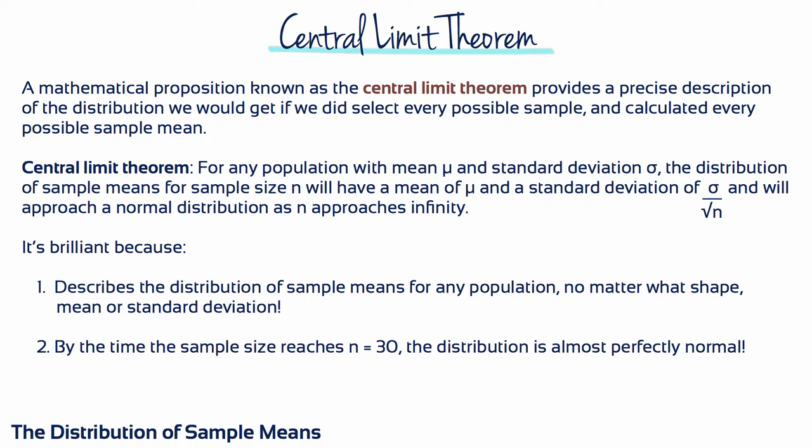Specifically, a mathematical proposition known as the central limit theorem provides a precise description of the distribution that would be obtained if you selected every possible sample, calculated every sample mean, and then constructed a distribution of those sample means. It's brilliant because it describes the distribution of sample means for any population, no matter what shape, mean, or standard deviation. And by the time the sample size reaches n equals 30, the distribution is almost perfectly normal.